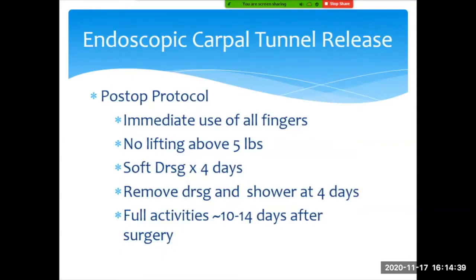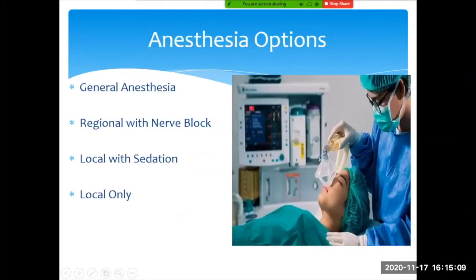The benefit of the endoscopic approach is faster recovery. When compared, patients get back to work and normal activities faster than with a palm incision. The palm is also where we apply pressure when getting up from a chair, or where a tennis racket or baseball bat sits — so it's beneficial not to have an incision there. Patients can quickly return to normal activities. Carpal tunnel is a good example to discuss anesthetic choices, because there are many different ways it can be done.